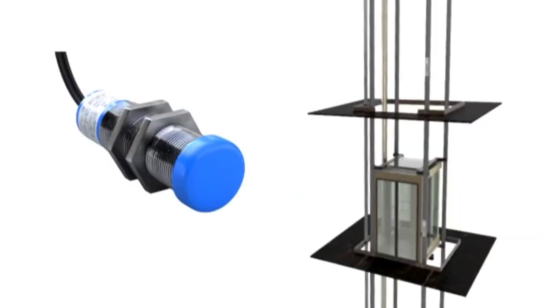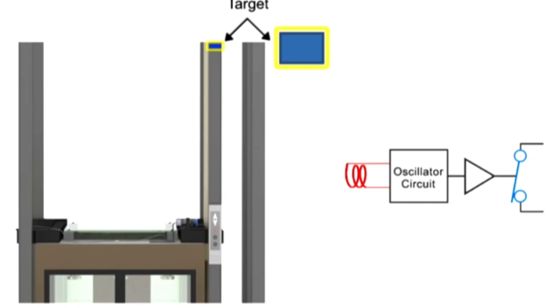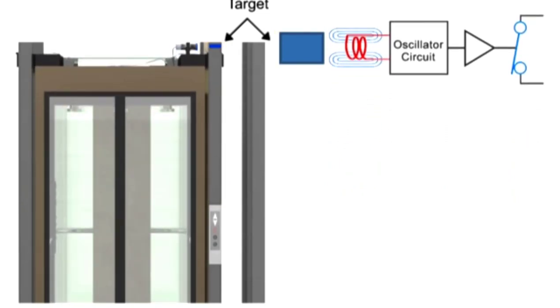Inductive sensors can detect a target from 0.5 mm to 40 mm. They only detect metallic targets and therefore use a magnetic field to detect its presence. When a ferrous metal material enters the magnetic field, electrical currents known as eddy currents are induced on the metal surface.